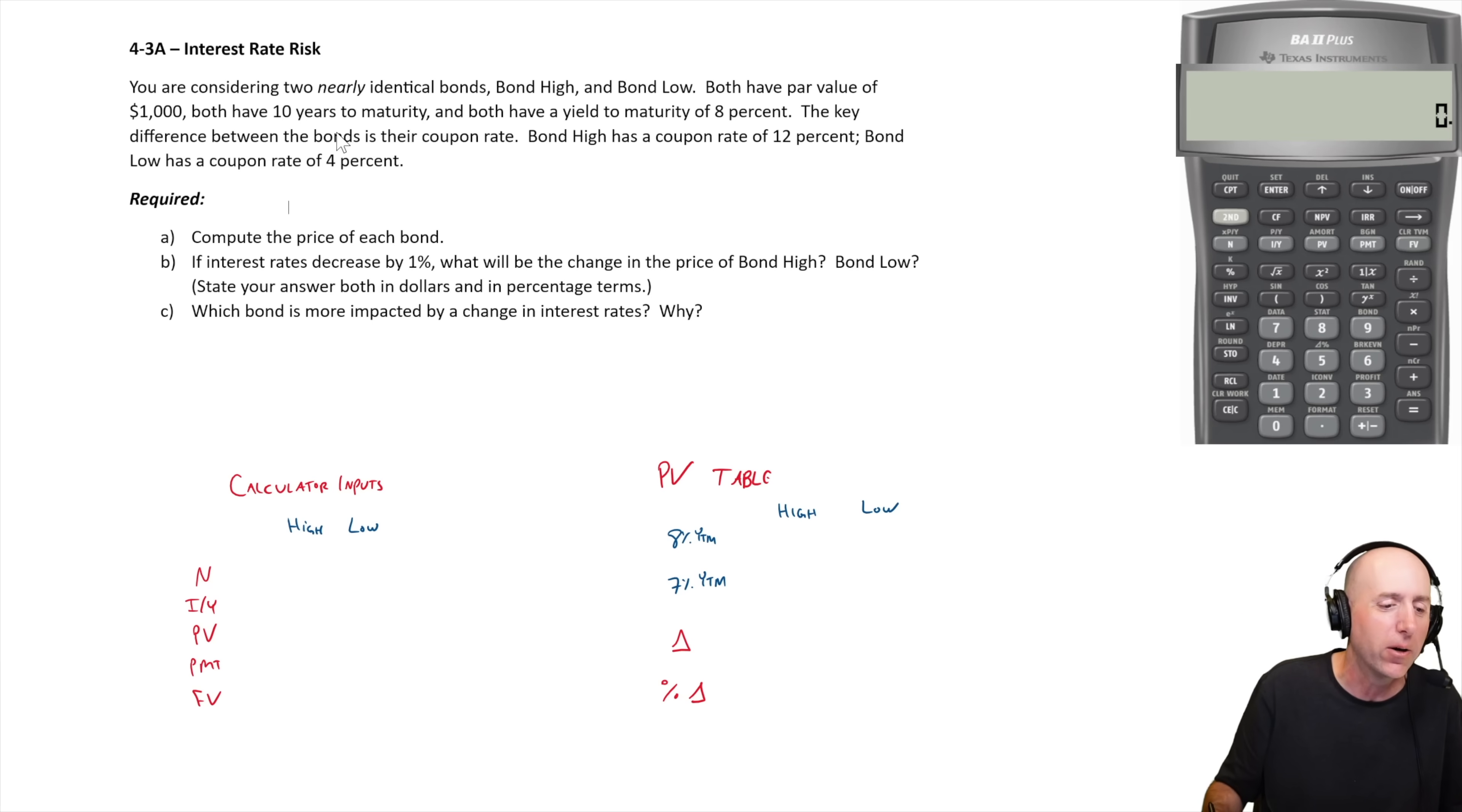Let's read the question. You are considering two nearly identical bonds, bond high and bond low. Both have par value of $1,000, both have 10 years to maturity, and both have a yield to maturity of 8%. The key difference between the bonds is their coupon rate. Bond high has a coupon rate of 12%, bond low has a coupon rate of 4%.